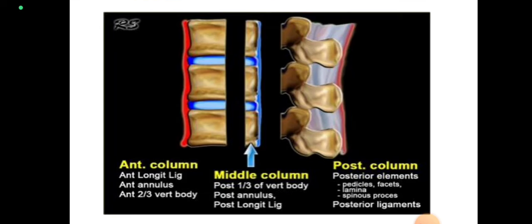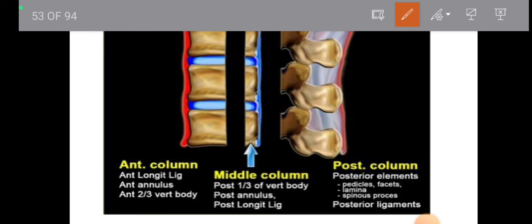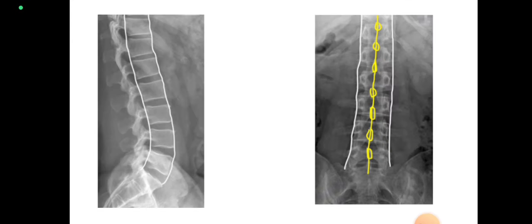We can divide the vertebra into three columns. The anterior column is made up of the anterior longitudinal ligament, anterior annulus, and anterior two-thirds of the vertebral body. The middle column is made up of the posterior one-third of the vertebral body, posterior annulus, and posterior longitudinal ligament. The posterior column is made up of posterior elements: pedicles, facets, lamina, spinous processes, and posterior longitudinal ligaments.